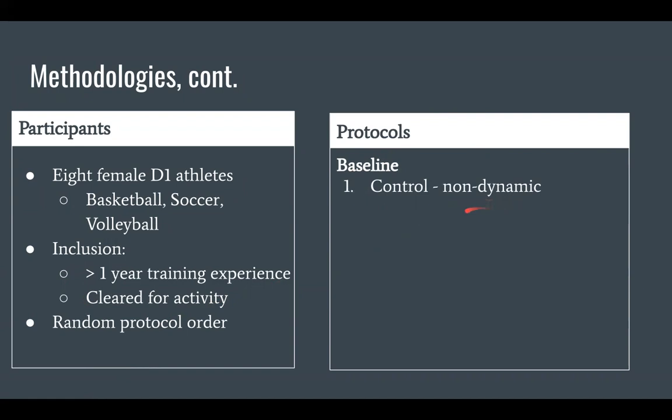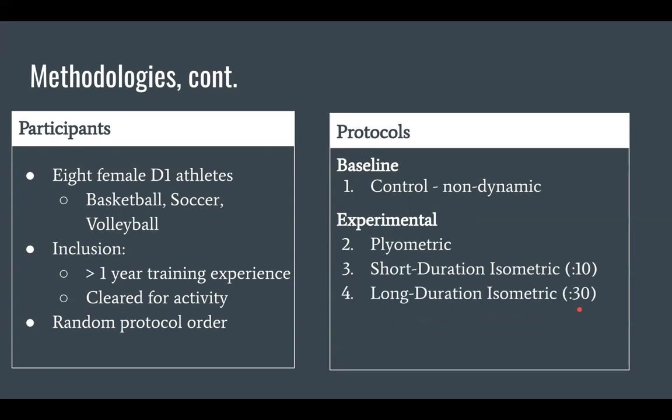Our baseline: we used a control warm-up to serve as a non-dynamic or a non-potentiating warm-up to warm the athlete up as little as possible, but not risk injury. All of the participants performed this protocol on their very first session. The randomization came with our experimental protocols, sessions two through four. And we had a plyometric, a short duration, and a long duration isometric contraction, the long being 30, the short being 10 seconds a side.